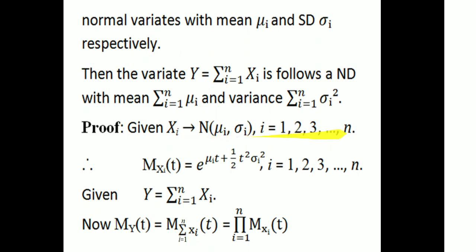Therefore, the moment generating function corresponding to Xi is Mxi(t) = e raised to μi·t plus half t squared σi squared, where i = 1, 2, 3, ..., n. We want to prove Y = Σxi, which is the normal variable with mean Σμi and variance Σσi squared. We want to find the moment generating function.